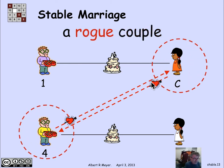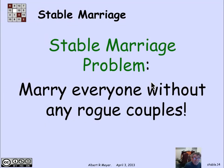They're called a rogue couple. When you have, in a set of marriages, a boy and a girl who prefer each other over their current spouses, they are said to be a rogue couple and a source of instability. The stable marriage problem is: can we get everybody married off with no rogue couples — a stable set of marriages? People may not be happy, but they'll never find anybody else who is unhappy in the same way and willing to run off with them. So it's stable.